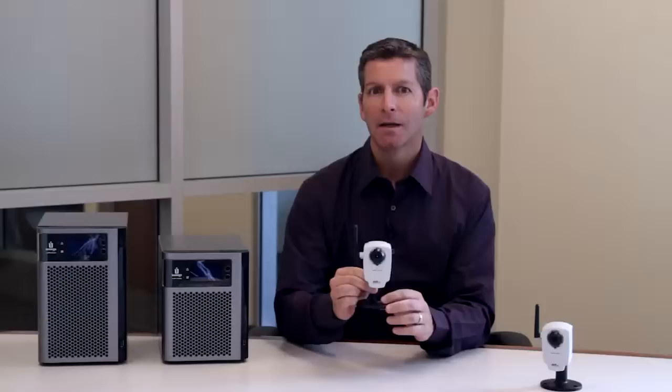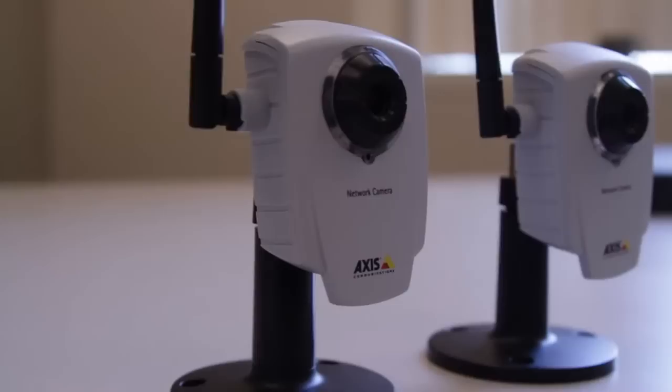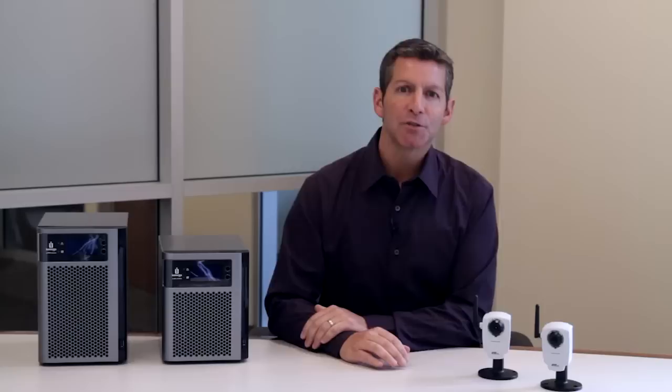IP security cameras are priced affordably, even on a small business budget. Prices vary on features like resolution or the quality of the picture. They also include motion detection and have control for camera movement for zooming in or panning across a particular view.